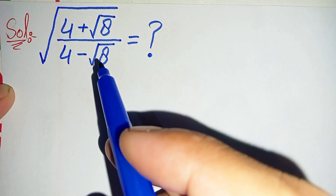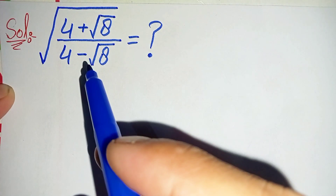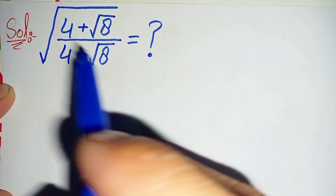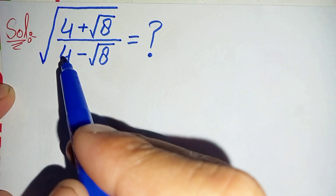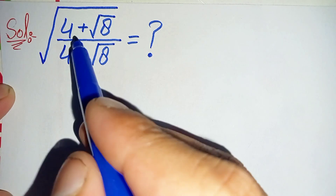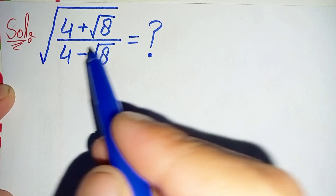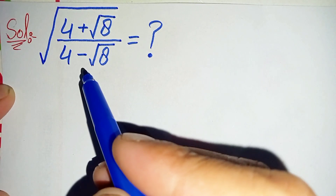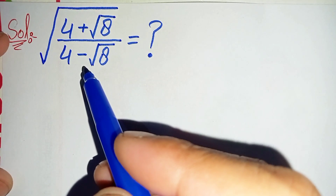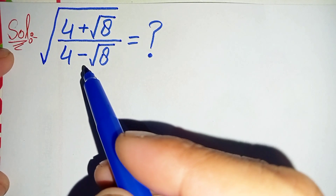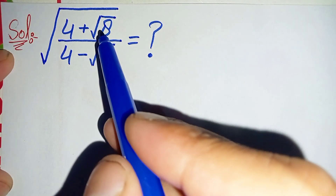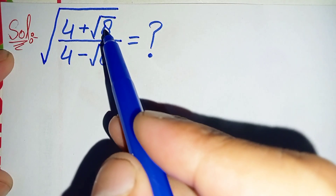Hello! How to solve this nice square root math problem, which is the whole square root of 4 plus square root of 8, divided by 4 minus square root of 8.